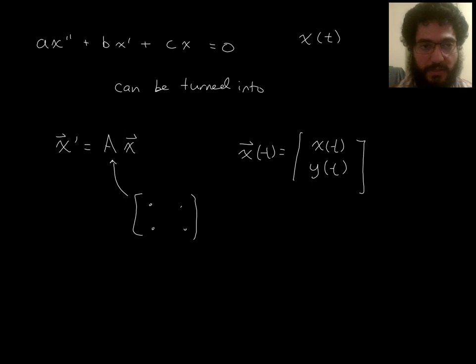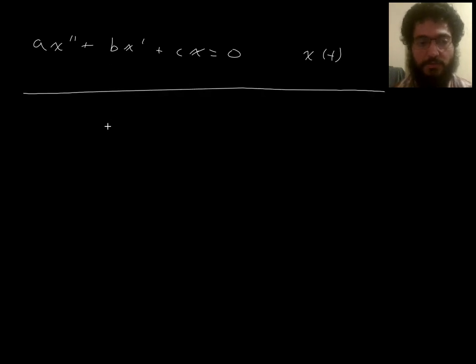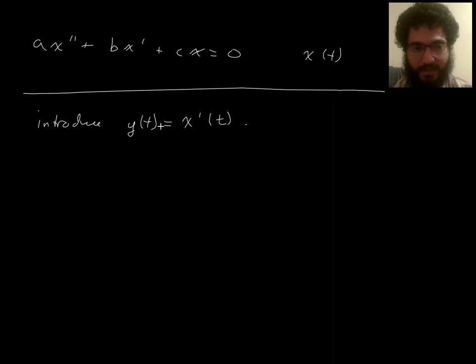Okay, so let's see how we can turn one into another. So let's start with one of these. So you've got this one unknown function, x of t. Then here's the key for turning this into a first-order system of differential equations. Introduce a new unknown function, y of t. And here's how I'm going to define y of t. It'll be x prime of t. So our new unknown function, y of t, will be the derivative of x of t.